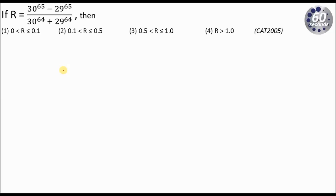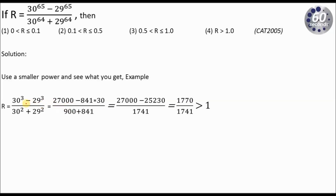I'll take an odd number to maintain similarity with the original. So if I use power 3, I get 30 cubed minus 29 cubed in the numerator, and 30 squared plus 29 squared in the denominator. These are smaller numbers we can calculate manually. 30 cubed is 27,000. 30 squared is 900. 29 squared is 841. For 29 cubed, I approximate: 841 times 30 gives 24,000 plus 1,230 equals 25,230. Note that I've inflated this by using 30 instead of 29, so the actual numerator is smaller than what I'll compute.